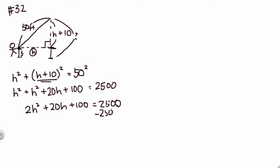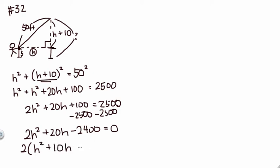Now I want to set it equal to 0, so subtract 2500 from both sides. When I do that, I get 2H squared plus 20H minus 2400 is equal to 0. I want to work with the smallest numbers possible, so I'm gonna factor out a 2. I get H squared plus 10H minus 1200 is equal to 0.